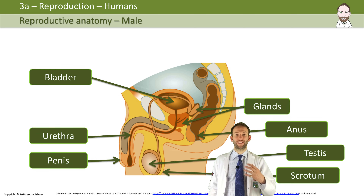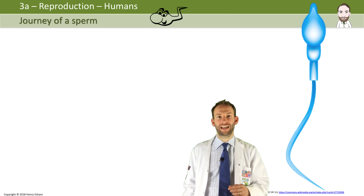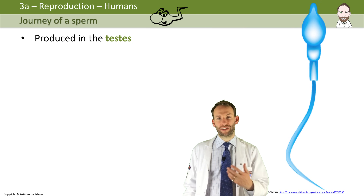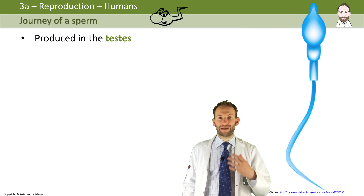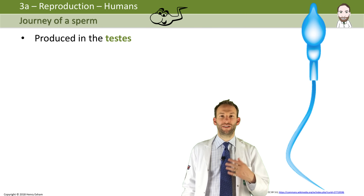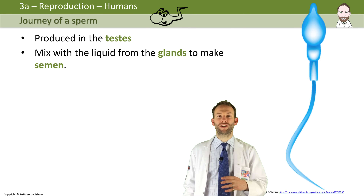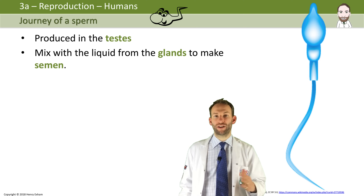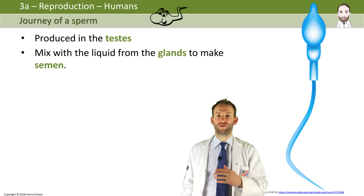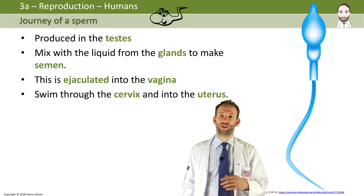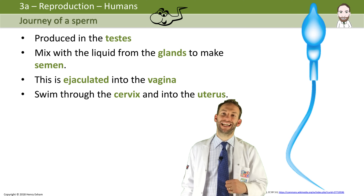So let's look at the journey of the sperm in a bit more detail. The sperm are first produced in the testes and they are produced all the time once the male has started puberty. They mix with the liquid secreted from the glands called semen, and then the sperm get ejaculated into the vagina during sexual intercourse. They then swim through the cervix and into the uterus, and then all the way up the fallopian tube where they will hopefully meet an egg.